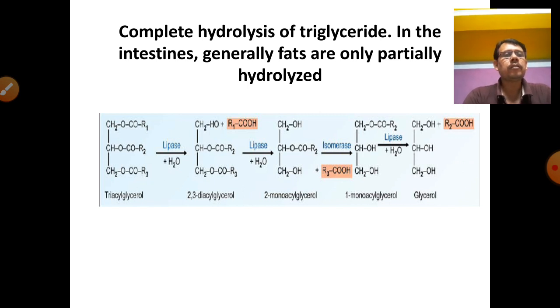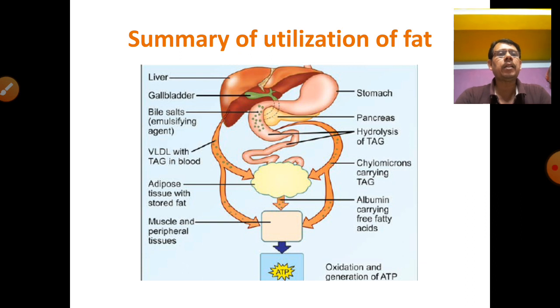Complete hydrolysis of triglycerides proceeds as follows: triglycerides are first acted on by lipase to form 2,3-diacylglycerol, then 2-monoacylglycerol, then isomerized to 1-monoacylglycerol, and finally lipase produces glycerol and fatty acids. After ingestion of fats or oils, they are ultimately converted into free fatty acids plus glycerol.